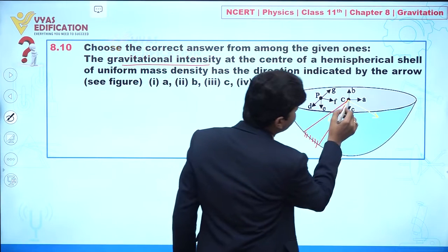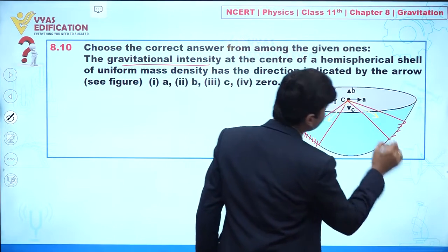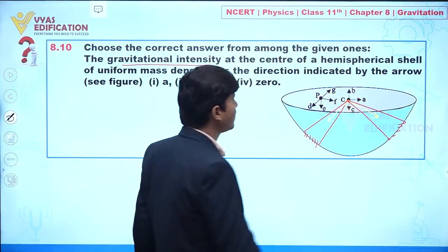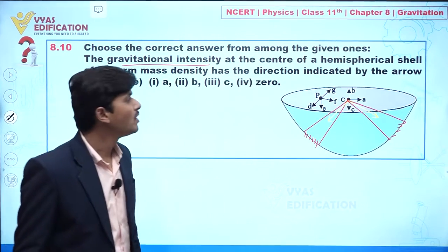So let's suppose if I take a very small element like this, the value of electric field—the direction of electric field—you are getting in this direction. Clear.